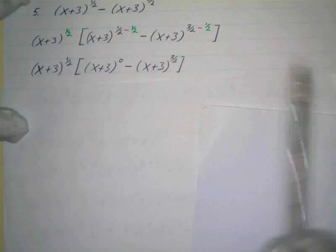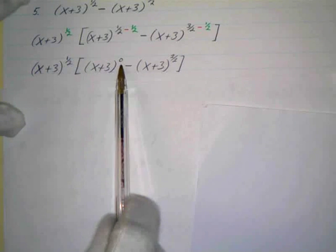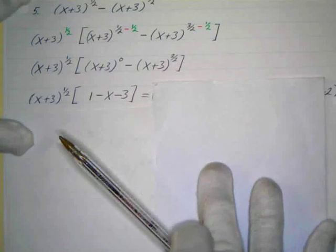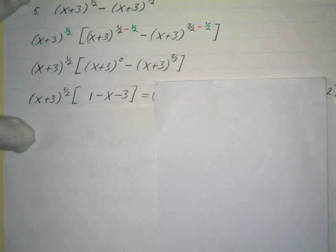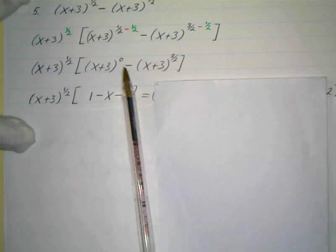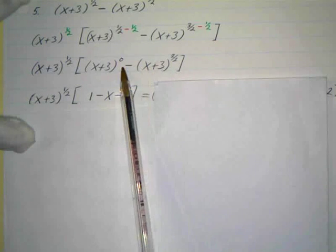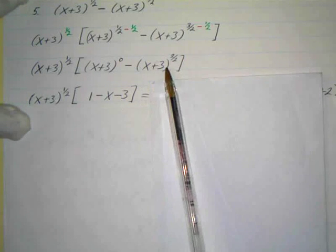I'm writing all these extra steps so you can see what's going on. You could possibly skip some steps, but be careful. Anything to the zero power is one, so x plus three to the zero power is one. Two over two is one, so this is just x plus three. This is one, and this is minus x plus three — a parenthesis preceded by a negative sign — so this becomes negative x and negative three. You can realize that this is just x plus three, so I can remove that parenthesis.